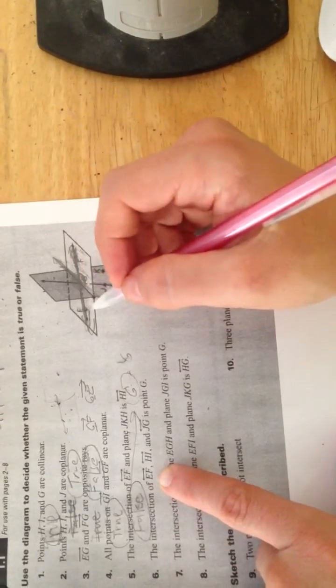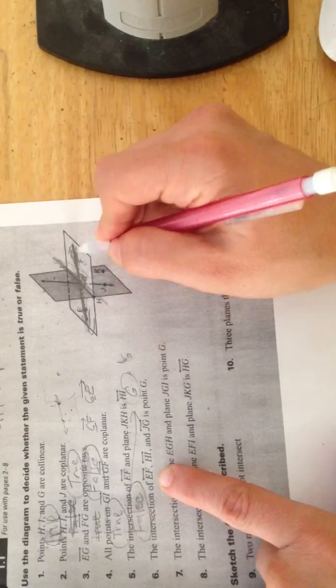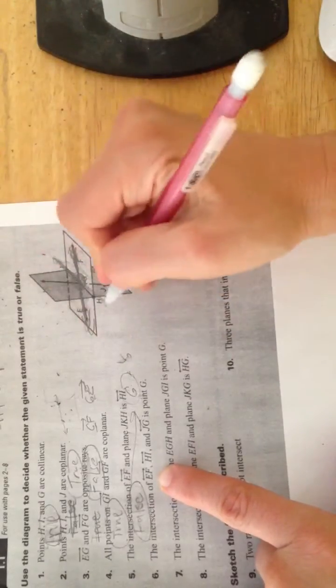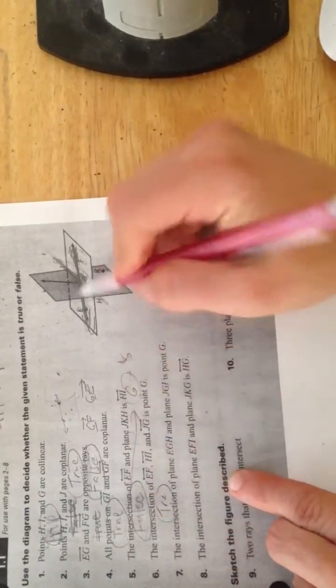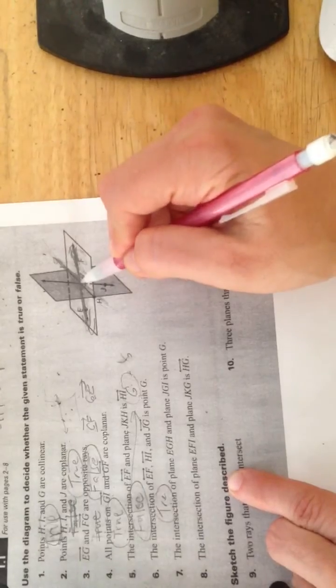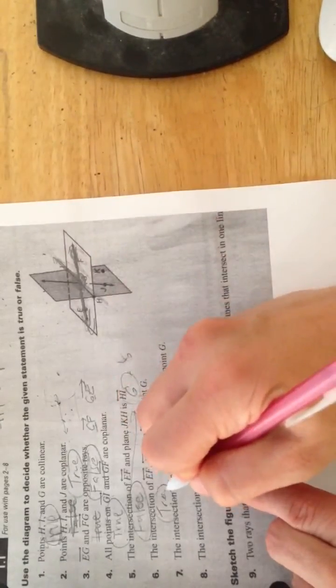Here they say that the intersection of EF, HI, and JG is the point G, and that's definitely true. They all meet at that point, so that's good, that's true.